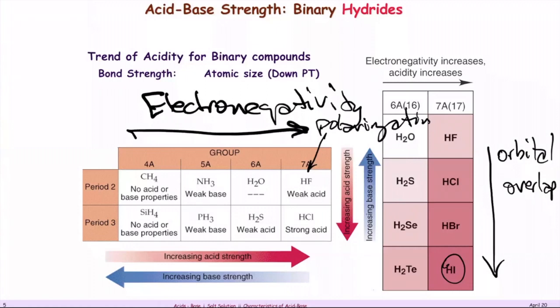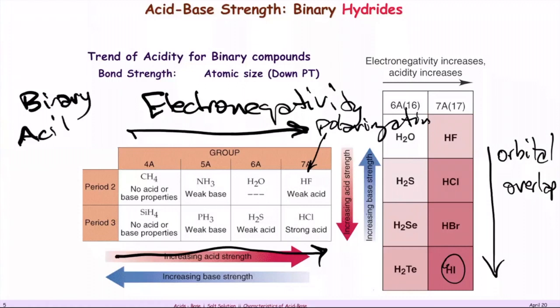In terms of acid strength for binary acids, it goes from left to right — the stronger acid is on the right side based on electronegativity — and top to bottom based on atomic orbital overlap. These rules are for binary acids only, meaning only two different types of elements.